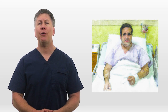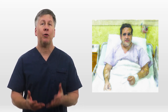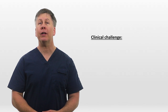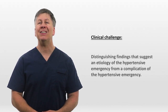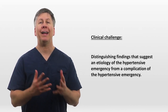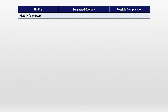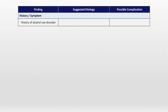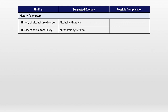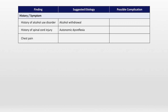So now you've arrived at Mr. Campos' room and you find him as described — in bed, confused, and a little agitated, but otherwise denying symptoms. A clinical challenge with evaluating acute hypertension, particularly hypertensive emergency, which this would likely count as, is distinguishing findings that suggest an etiology of the hypertension from a complication of the hypertension. If the patient has a history of recent alcohol use, that obviously suggests that alcohol withdrawal could be the etiology. And if the patient has a history of spinal cord injury, that suggests it could be autonomic dysreflexia. But what if the patient is reporting chest pain? On one hand, chest pain can be a symptom of anxiety, suggesting that anxiety is the cause of the hypertension. On the other hand, chest pain can be a symptom of demand ischemia, or even an aortic dissection, which could be the result of the hypertension.